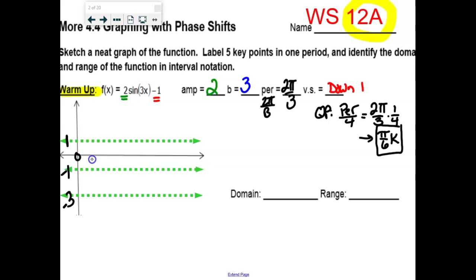Zero is our starting point when there's no phase shift. Then we have π over 6, then 2π over 6 — reduced to π over 3. Then 3π over 6, better known as π over 2. Then 4π over 6, better known as 2π over 3.